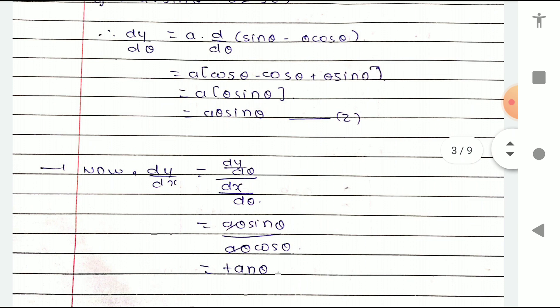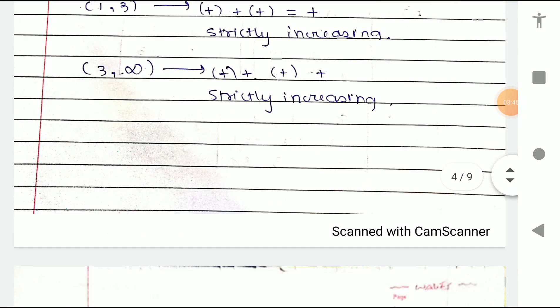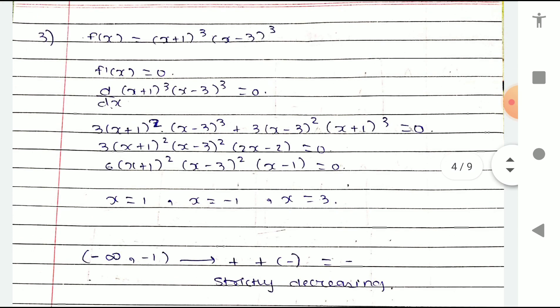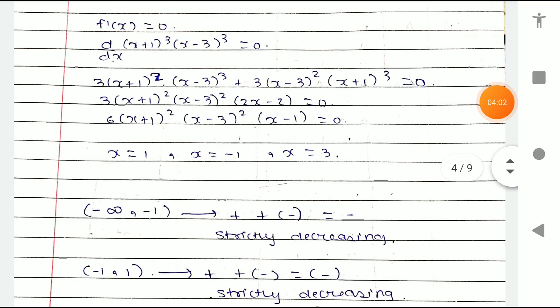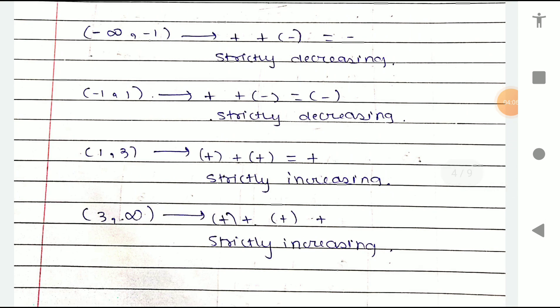Now let's go to Question 3. Here f(x) = (x+1)³ · (x−3)³. You can pause the video and write down the answer. The conclusion is that the function is strictly increasing — it keeps on increasing.